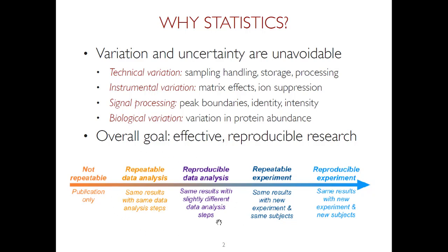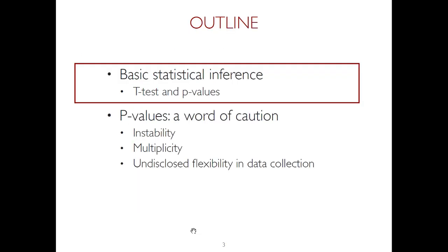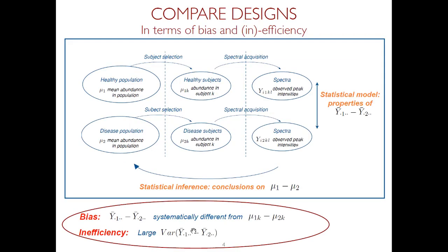Today I will focus on statistical methods that allow us to characterize sources of variation. I will talk about a very simple method — essentially a t-test — and discuss different aspects of it. First I will tell you how good it is, and then I will tell you how bad it is. That's the plan for the day.